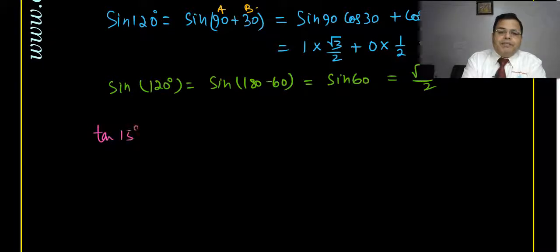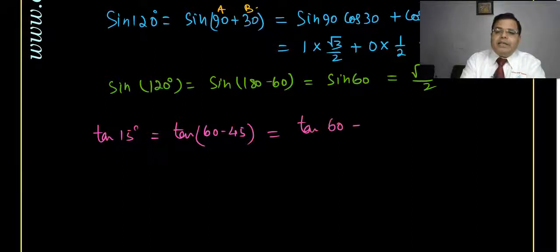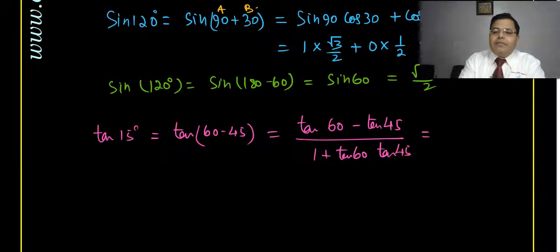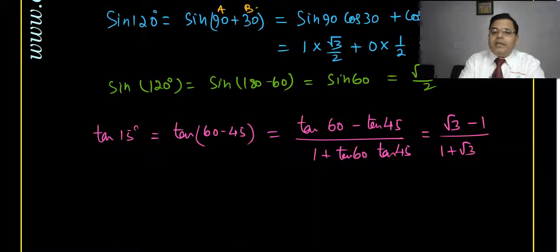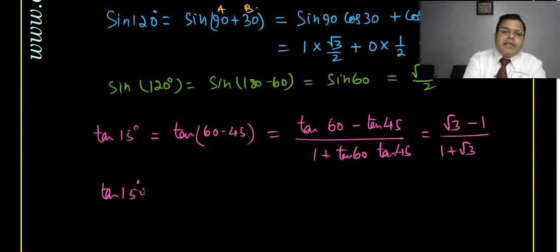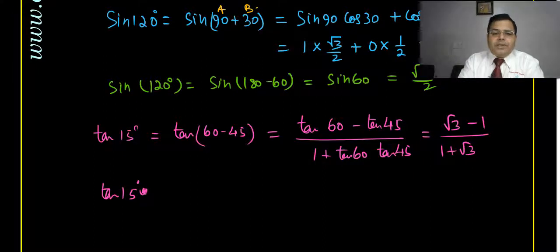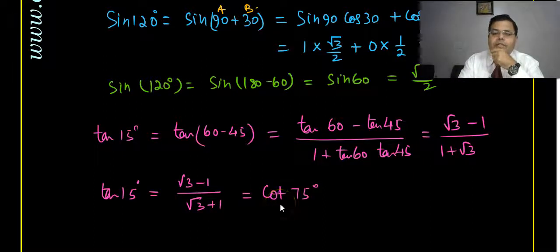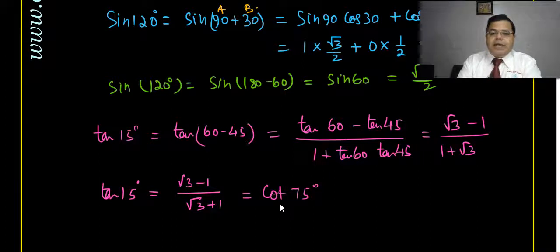Now we can calculate some values using these formulas. For example, to calculate tan 15°, we can write it as tan(60° − 45°). Using the formula for tan(A−B): (tan 60° minus tan 45°) upon (1 plus tan 60° tan 45°). Since tan 45° is 1 and tan 60° is root 3, this gives (root 3 minus 1) upon (root 3 plus 1).